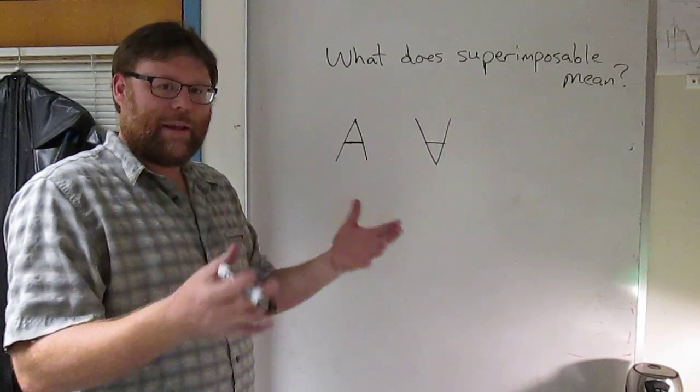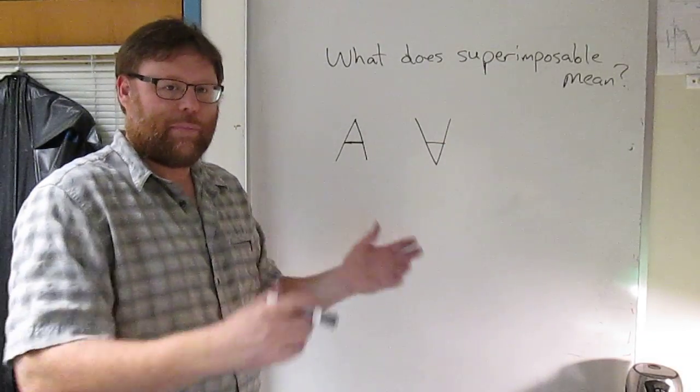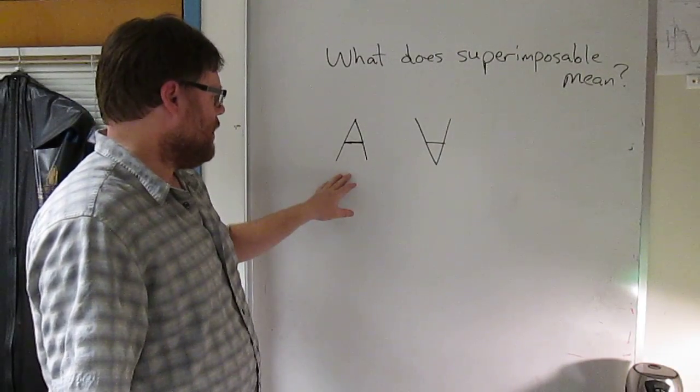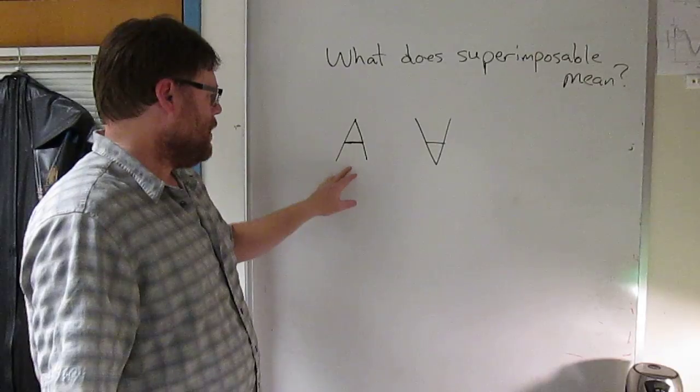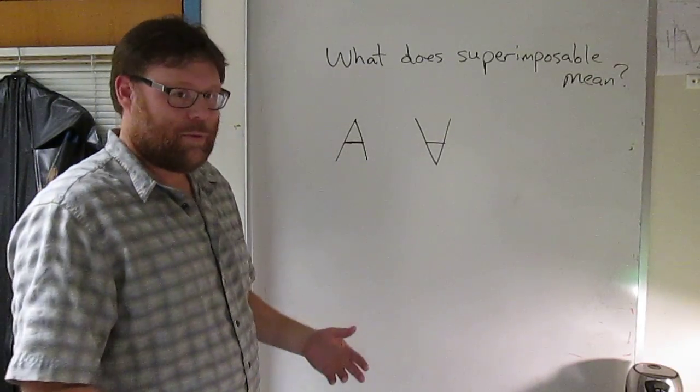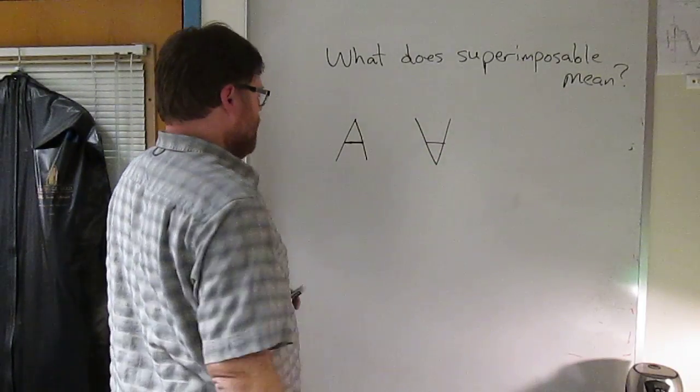So sort of physical, think about the two objects, the two structures as if they're just a physical thing that you can pick up and play with. So to demonstrate, I've drawn a couple of letters here. Letter A and an upside down letter A. Are these superimposable? They are. I just take this A and I flip it over like that.